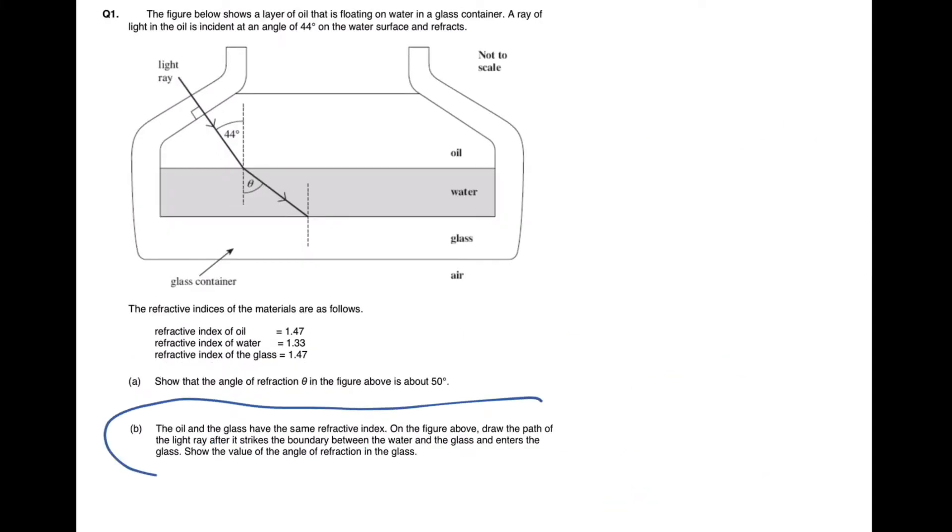The next part of this question is asking us to actually draw on the path of the light ray after it strikes the boundary between the water and the glass. The ray is going to look like this because the glass has a larger refractive index than the water. So the refractive index of water is 1.33 and glass is 1.47 so it's going to bend towards the normal at an angle of 44 degrees if you look at the symmetrical properties and the fact that the refractive index of the oil and glass are equal.